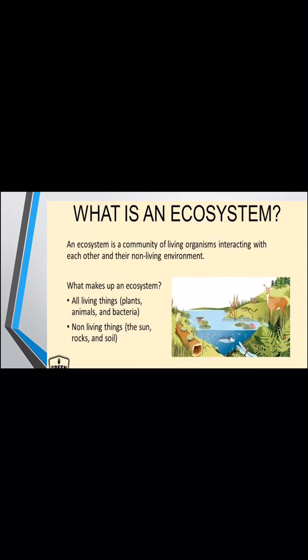We can take the example of an animal. Animals are unable to synthesize or prepare their food directly, so they depend on plants either directly or indirectly — either these animals are grass eaters, or they depend on those animals which eat grass. An ecosystem is made up of all living things like plants, animals, bacteria, and non-living things like the sun, rocks, soil, wind, water, etc.